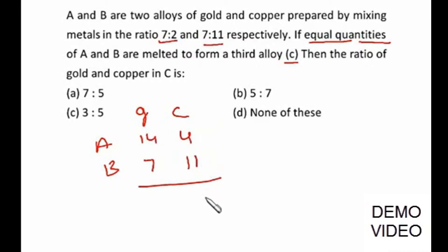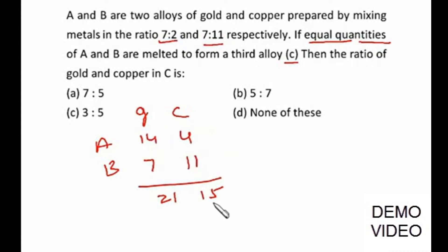So total gold is 14 + 7 = 21 and total copper is 4 + 11 = 15. The ratio of gold and copper is 21:15, which simplifies to 7:5. As simple as that — no paperwork is required. I hope you are clear.